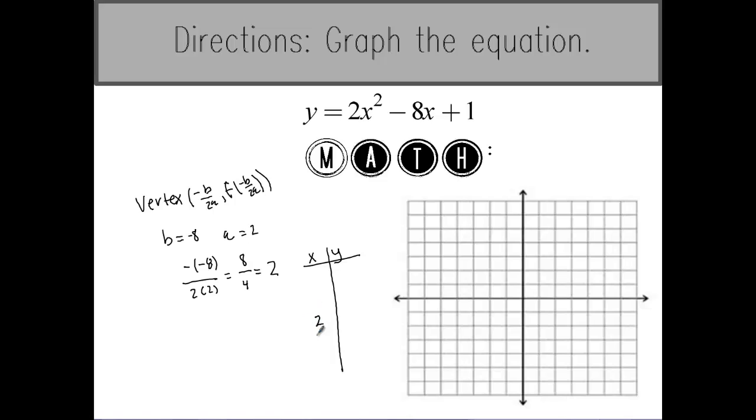Then I pick a value smaller than 2 and a value bigger than 2. One number just smaller than 2 is 1 while one number just bigger than 2 is 3. These are the X coordinates that I'm going to plug in to my function Y equals 2X squared minus 8X plus 1 to find my Y values which will give me three coordinate points that I can plot on the graph.